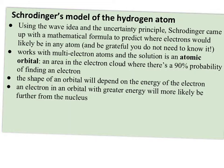Schrodinger's model of the hydrogen atom, he came up with this hugely complicated mathematical formula to predict where electrons would likely be in an atom, and it works with multi-electron atoms. The solution is an atomic orbital or an area on a three-dimensional graph, an area in the electron cloud where there's a 90% probability of finding an electron. So this is how scientists came up with this idea of orbitals, a spherical S-shaped, a peanut-shaped P-orbital, etc. The shape of these orbitals depend on the energy of the electron, and an electron in an orbital with greater energy will more likely be further from the nucleus.